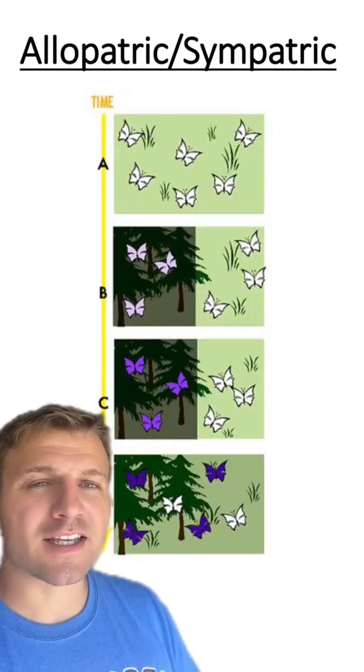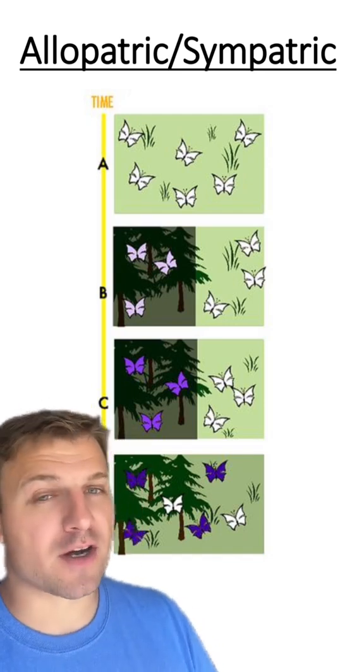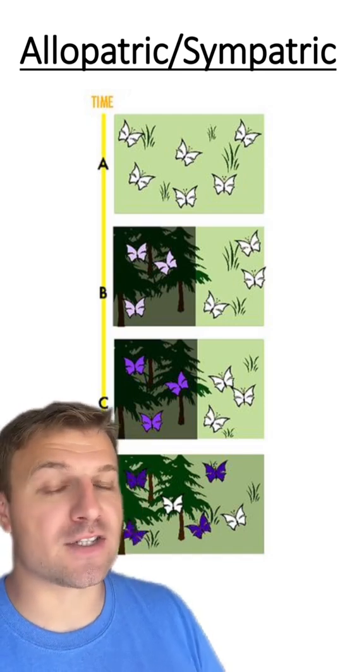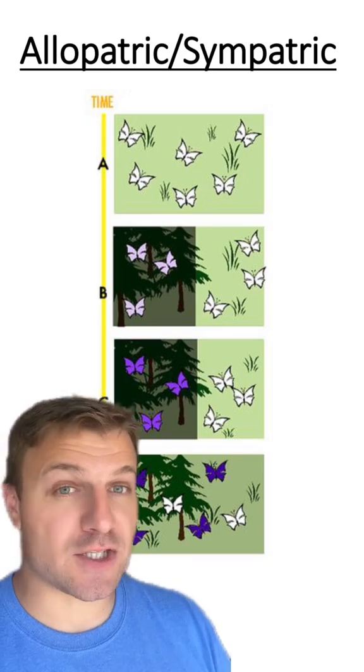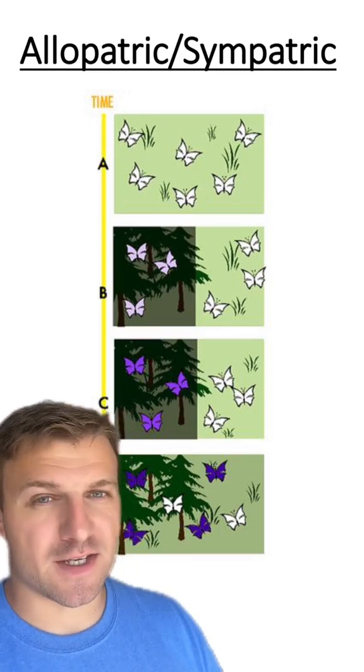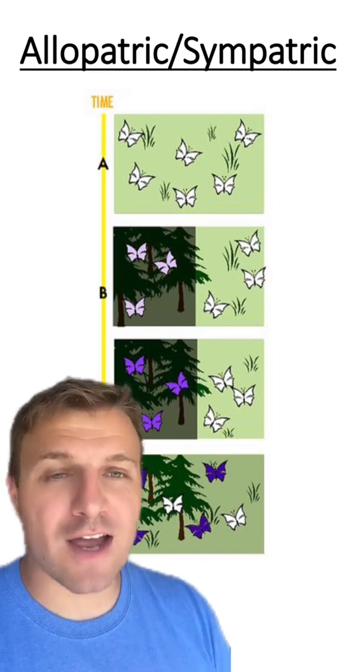In our second example you start with a species of white butterflies. Within the same environment one group of the butterflies become darker and speciate into a different species. Eventually after many generations becoming two distinct species. So what type of speciation is this? This is an example of sympatric speciation since there wasn't a geographical barrier.